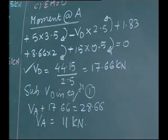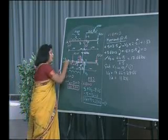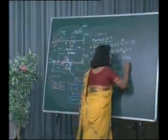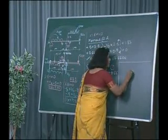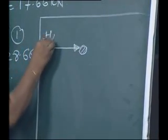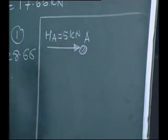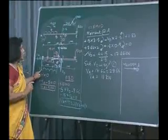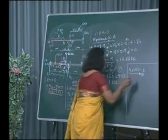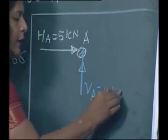This is how we find out the reactions. At support A, we are having one horizontal reaction HA obtained as positive, so our assumed direction is right — HA is equal to 5 kilo newtons. Support reaction VA is also positive, so our assumed direction is right — VA is equal to 11 kilo newtons.